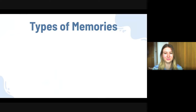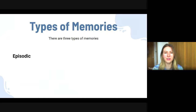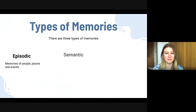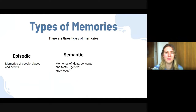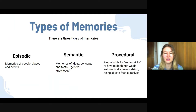There are three types of memories you need to be familiar with. Firstly, episodic memories — these are memories of people, places, and events. The second type are semantic memories — these are memories of ideas, concepts, and facts; it's your general knowledge. Finally, there are procedural memories, which are responsible for your motor skills or how we know how to do things automatically.